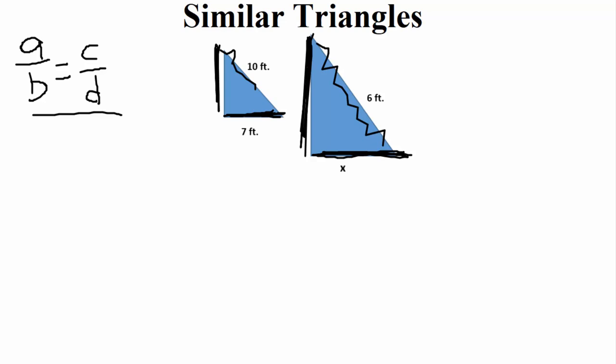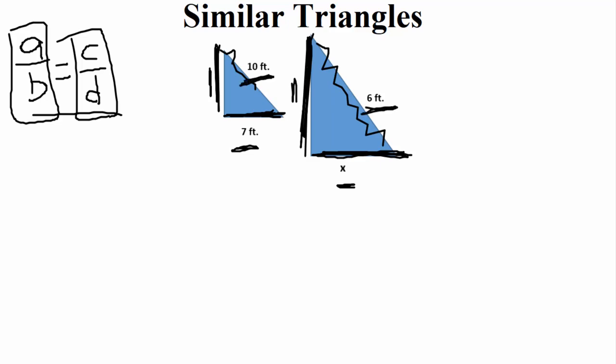We need to do this because when we set up our proportion, we need similar sides. Similar triangles are solved using proportions — a proportion is one fraction set equal to the next. The first fraction I set up, I always make it information that we know. So comparing these two triangles, pick two sides we have. The sides I know both pieces of information for are the diagonals — the hypotenuse. The little one is ten feet and the big one is six feet, so my first proportion is ten feet to six feet.